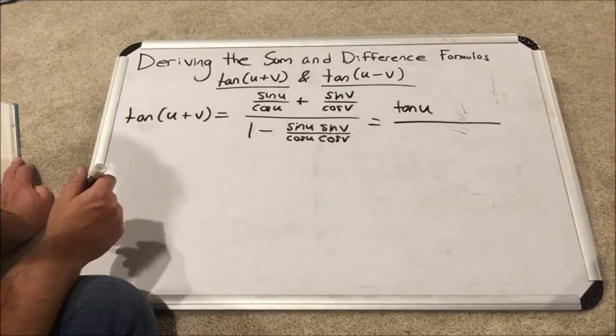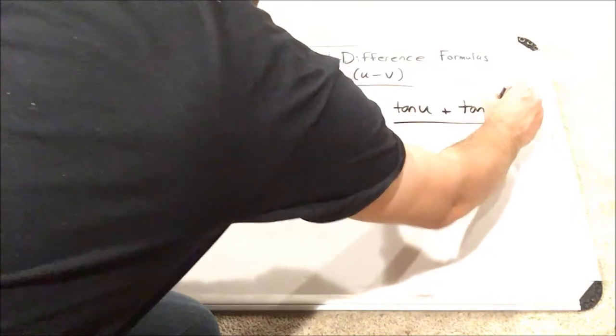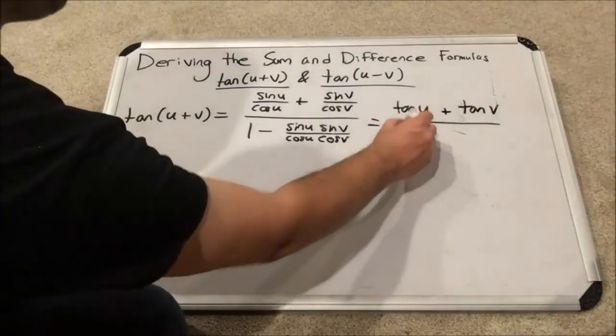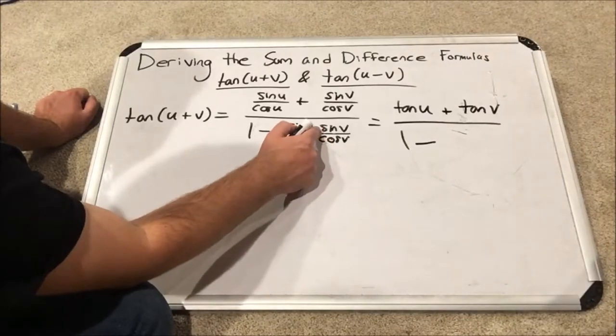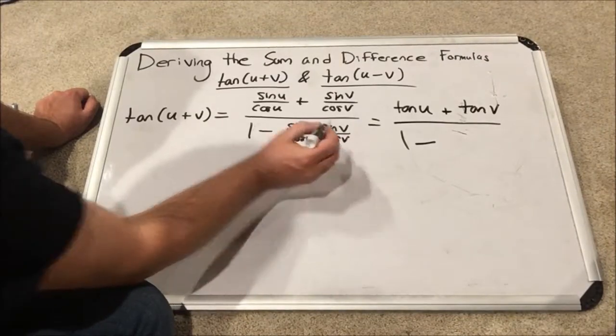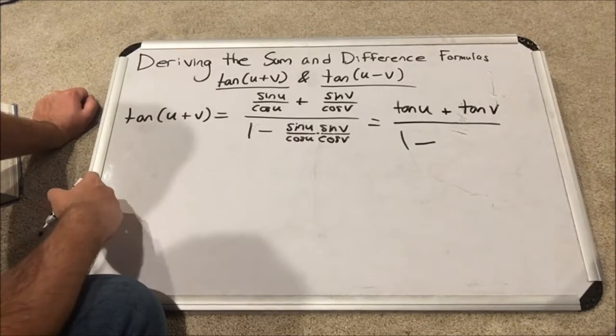Sine v over cosine v, that will be tangent v. On bottom, we'll have the one minus. Now, let's talk about this. If we split this fraction up into two fractions multiplied by each other, you could see that the first fraction is sine u over cosine u. That's tangent u, just like on top.